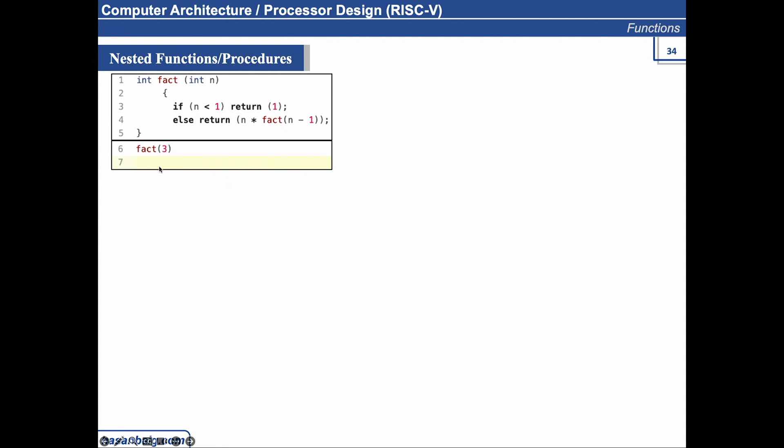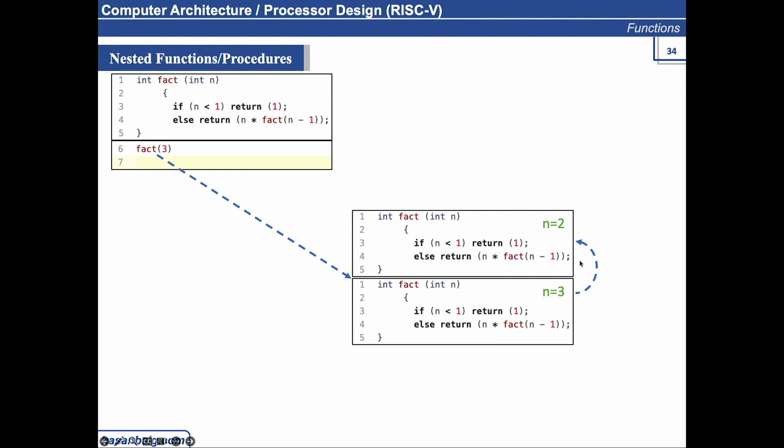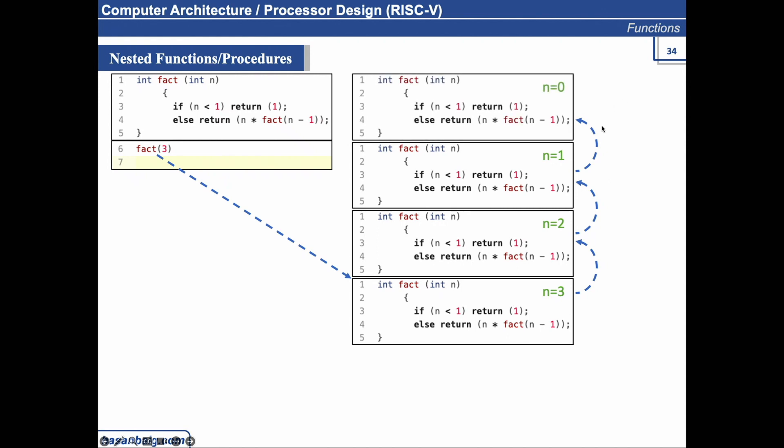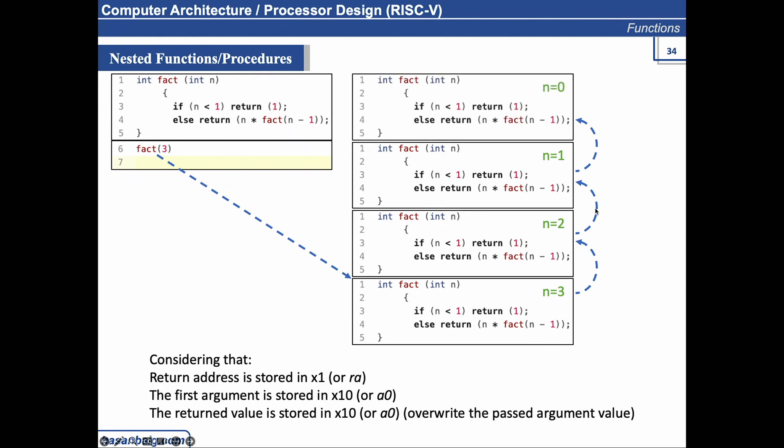And let's say seven is the next instruction that is going to be executed. What happens when fact is called? It will call this function with the value N equals three. Now when we call it again, the value will keep on decreasing N equals two, N equals one, and N equals zero. Now first consider that whenever we call a function, what two important things we need to consider? The return address, the address of the next instruction, which is stored in X1 or RA, if you're talking in terms of RARS. The first argument is stored in X10. Again, the reference sheet is in front of you, X10 or A0.